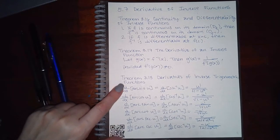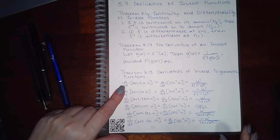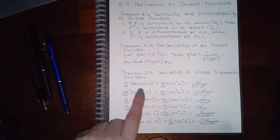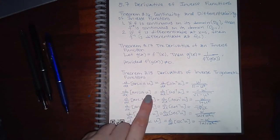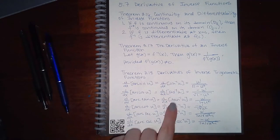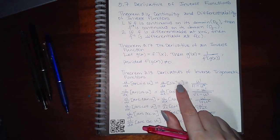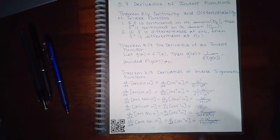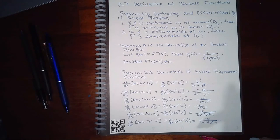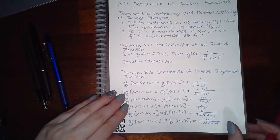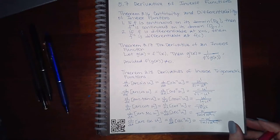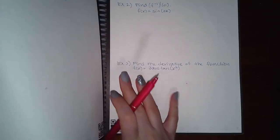Theorem 3.18 covers the derivatives of inverse trig functions, giving all the formulas. Whether you use the notation arc sine, arc cosine, arc tangent, or sine-inverse, cosine-inverse, tan-inverse, they all refer to inverse trig functions. The derivative has the angle's derivative in the numerator and some expression involving u in the denominator. The book has the proofs; for us, we mainly need to learn how to apply these rules.